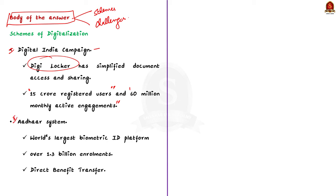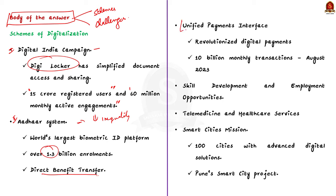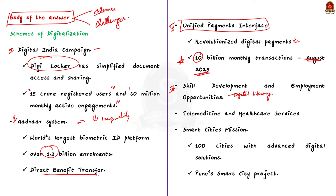Second, the Aadhaar system — the world's largest biometric ID platform with over 1.3 billion enrollments — helps provide services like DBT, contributing to reducing economic inequality by providing avenues for savings, investments, and access to credit. Third, the Unified Payment Interface (UPI) has revolutionized digital payments in India, enabling seamless and real-time monetary transfers. The historic milestone of 10 billion monthly transactions in August 2023 emphasized widespread adoption of digital payment solutions. Fourth, digital literacy and skill development programs under Digital India can empower people with the necessary skills for the digital economy, create employment opportunities, and reduce the digital divide.